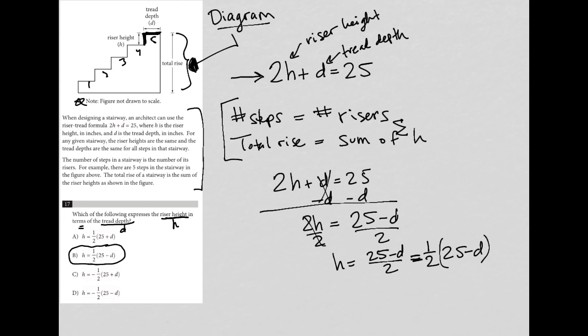These two things are equivalent. So even if you were to multiply it and say, well, 25 minus D over 1, you can see how once you multiply that, you get right to here. So it is true that H is equal to one half times 25 minus D, choice B.